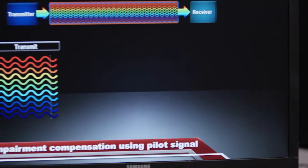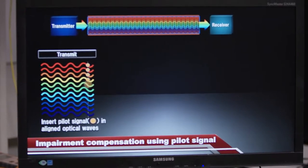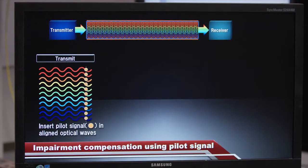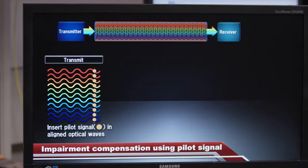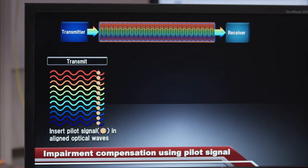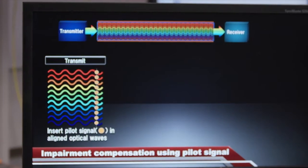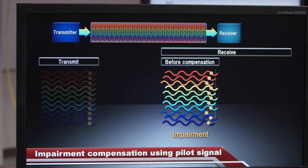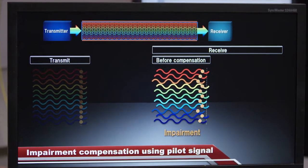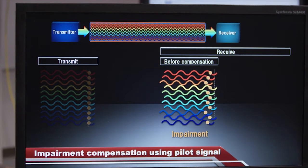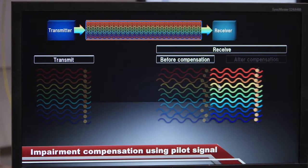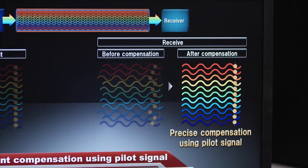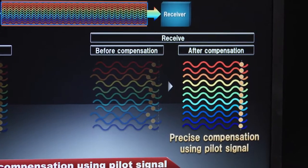So one thing that we've come across that works very well is to insert these periodic pilot signals. So we insert a known signal every so often into the data and we transmit this. So when this arrives at the receiver, we again have these uneven distortions that are different from sub-channel to sub-channel. But by using the known signals that occur every so often, we're able to much better compensate for these unknown distortions.